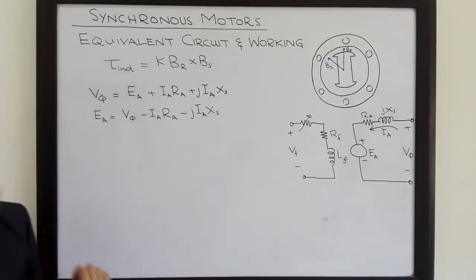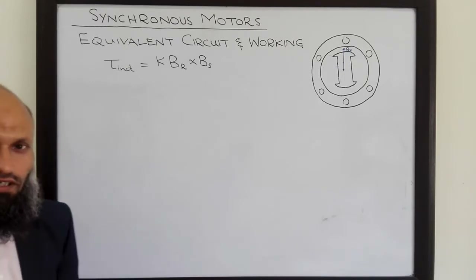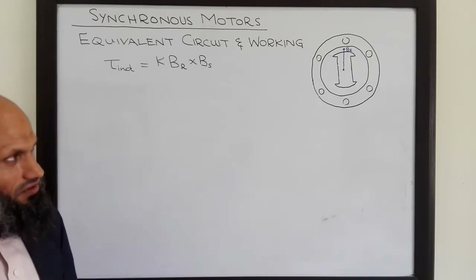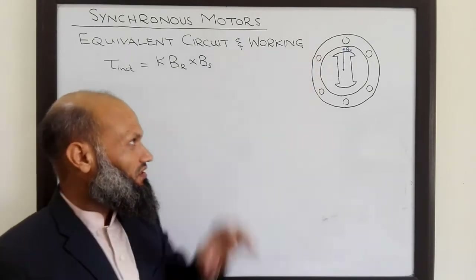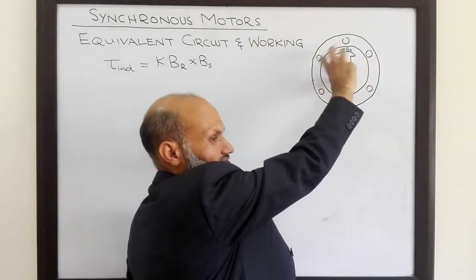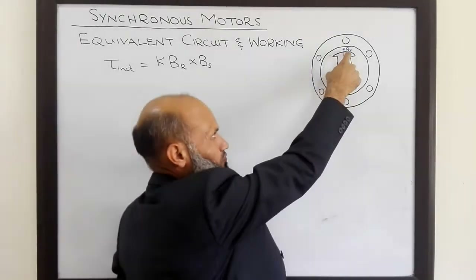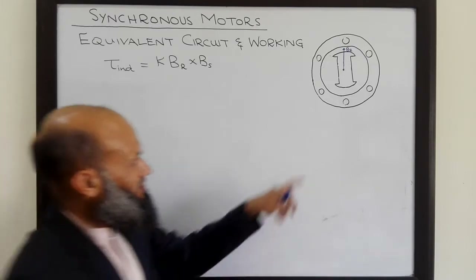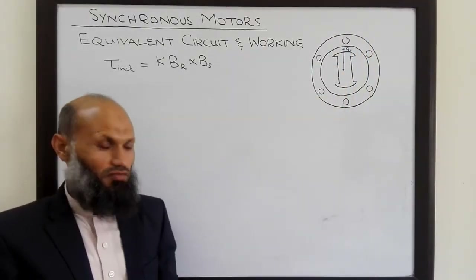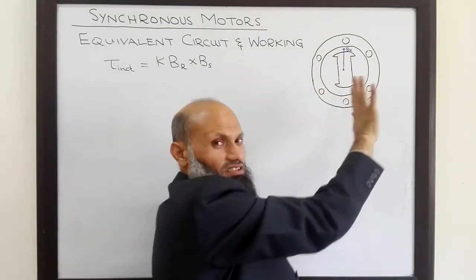To explain the working of synchronous motors with the help of phasor diagrams, let's consider a situation where this machine is initially working as a synchronous generator. That is, we have connected some external prime mover to the rotor, which rotates the rotor at synchronous speed, and due to the rotor magnetic field, voltages are induced in the coils. Then this armature is connected to an infinite bus — that is, the electrical power generated by the generator is transmitted to the infinite bus.